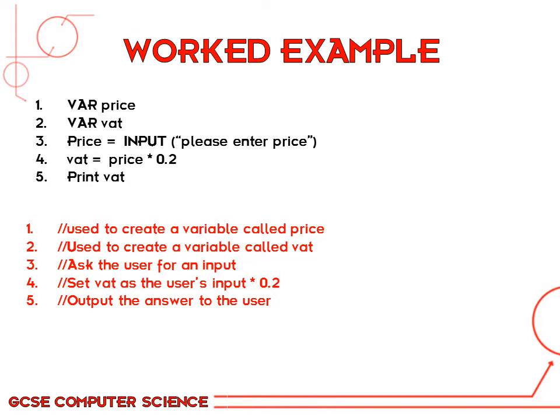On line three: price equals input, and then in brackets with speech marks, 'Please enter price.' So I've created a string of text that's displayed on the screen, and whatever you type in is assigned as the input and set to the price variable — basically price equals whatever you type in. Line four: VAT equals price multiplied by 0.2. So whatever value you've typed in gets multiplied by 0.2 and assigned to the variable called VAT.